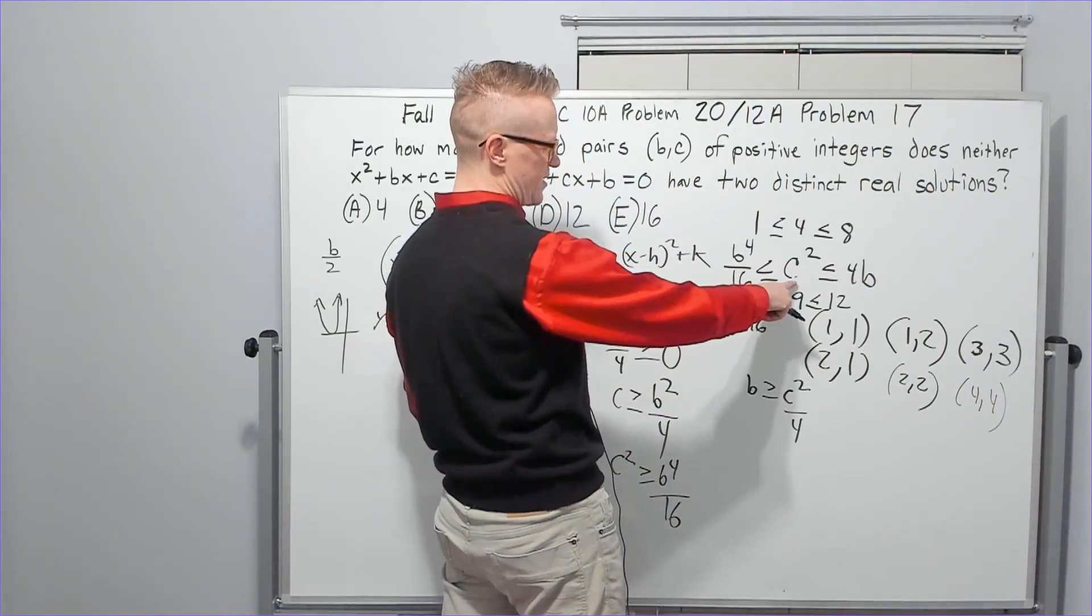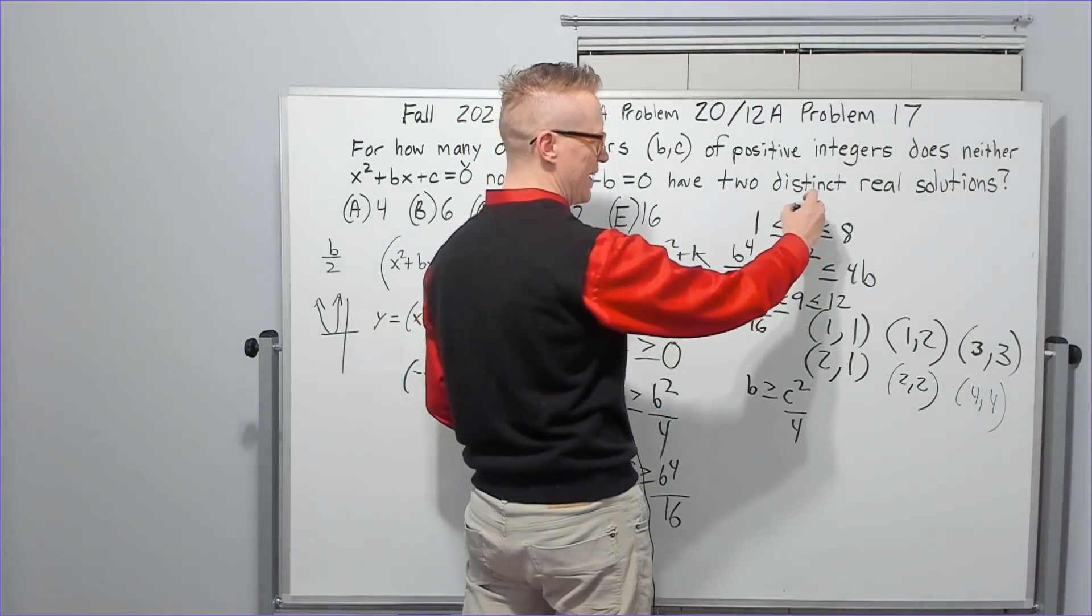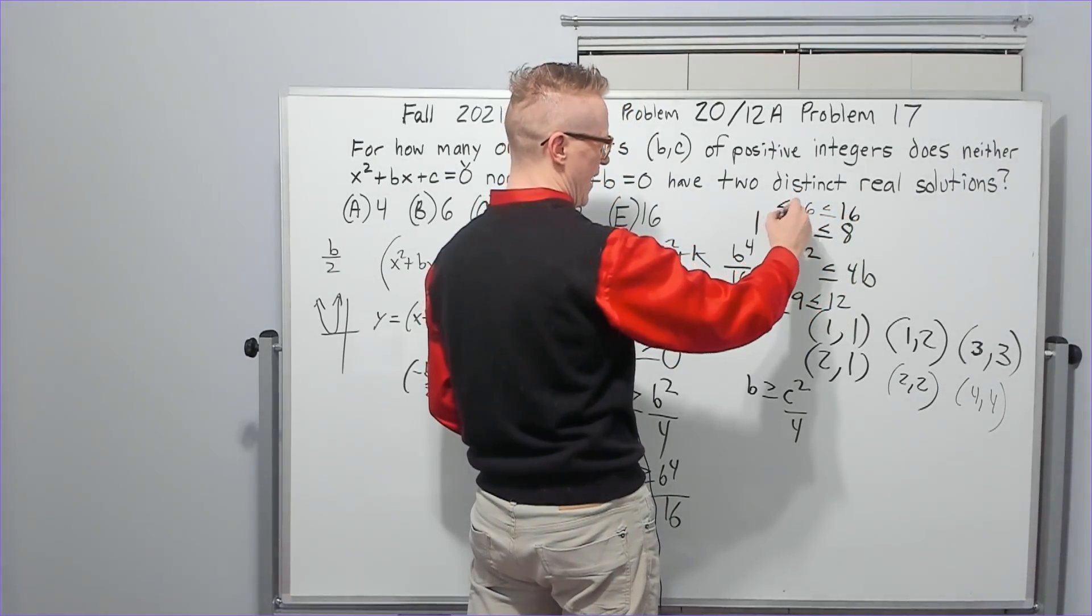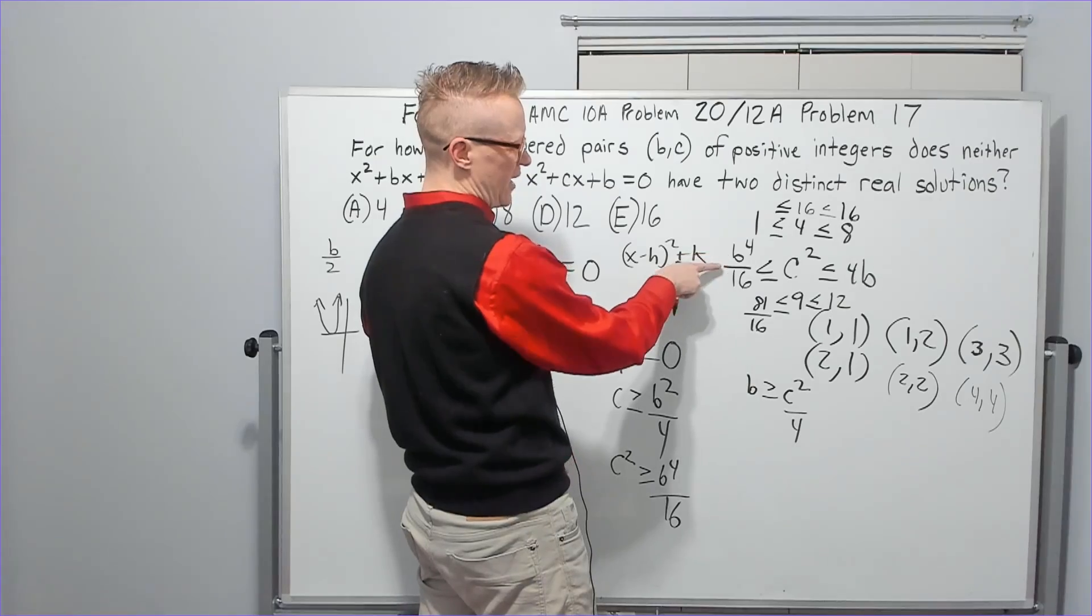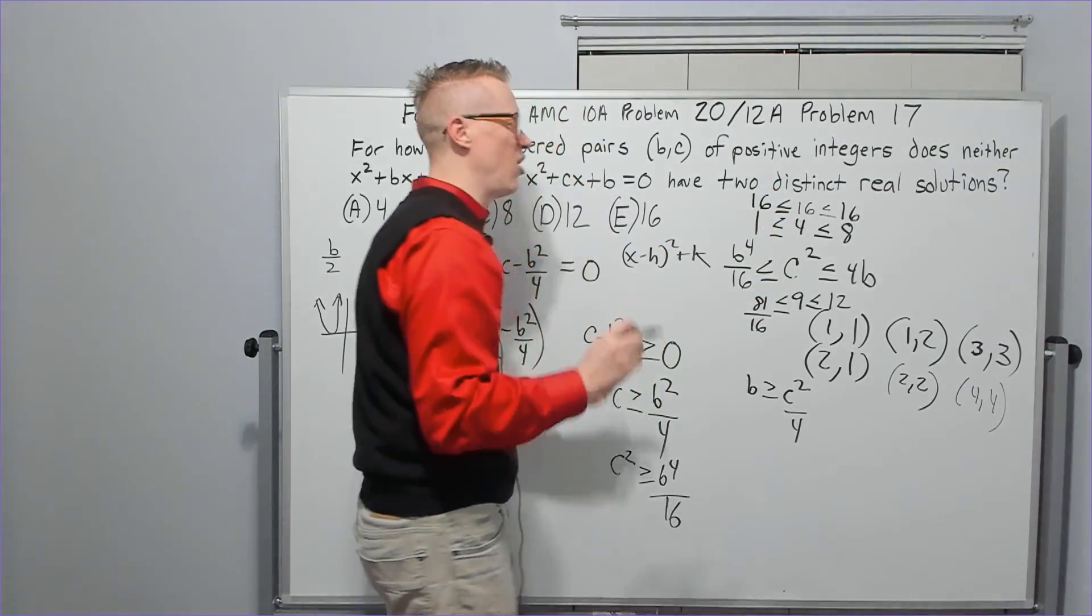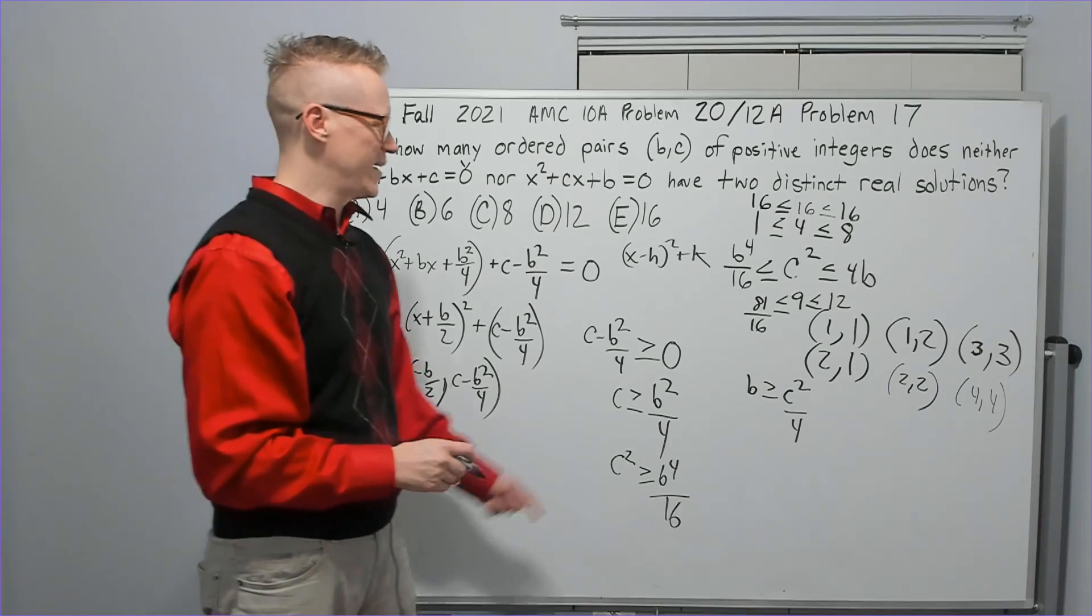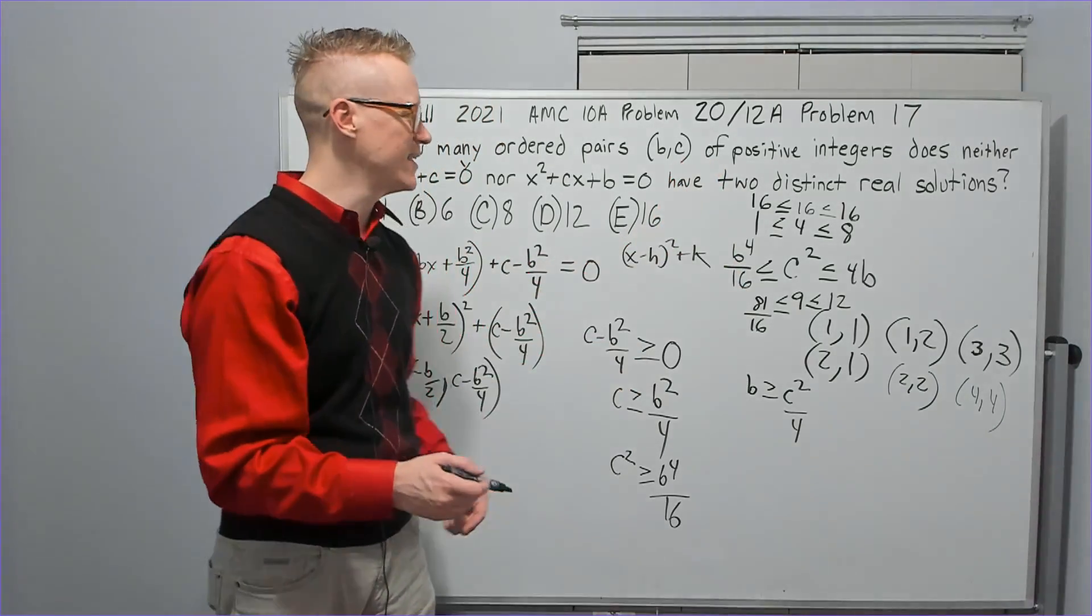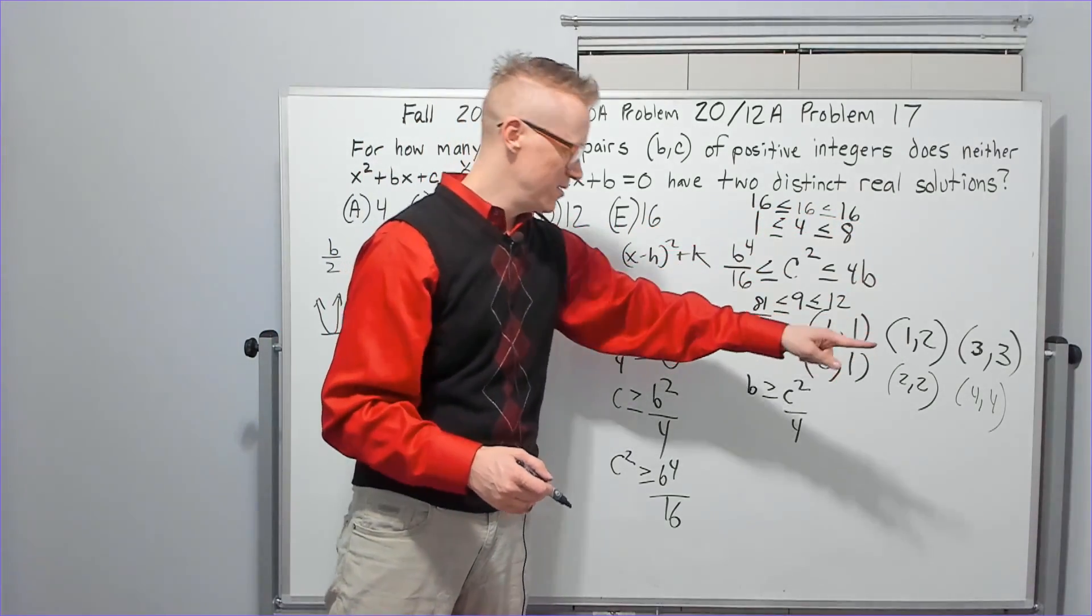And b takes on the value of 4, it'll be 16. And if I plug in 4 here, I've got 256 over 16. It means they're all 16, right? Because 4 to the 4th is 16 squared, which is just divided, you get 16. This is a true statement. (4,4) works.